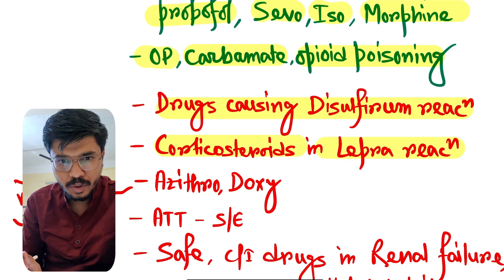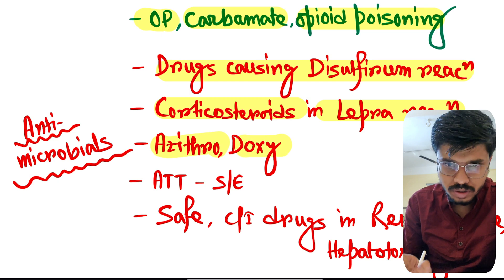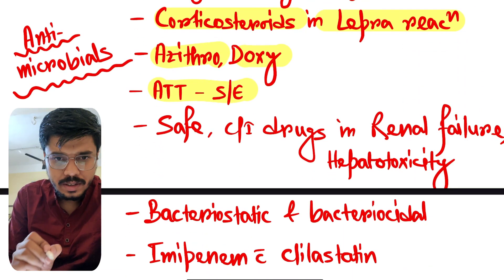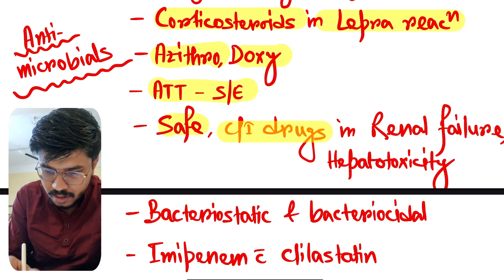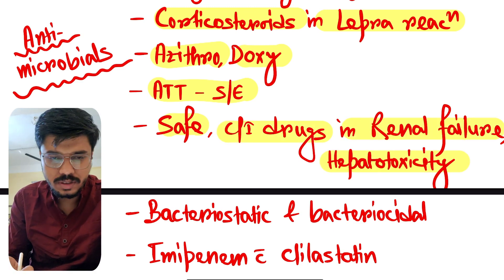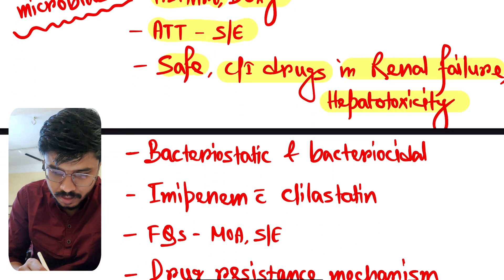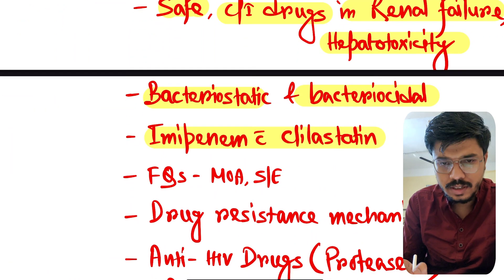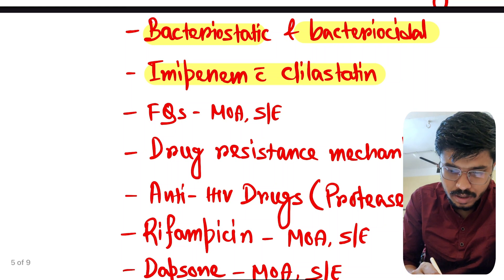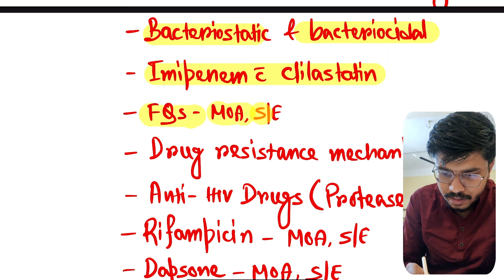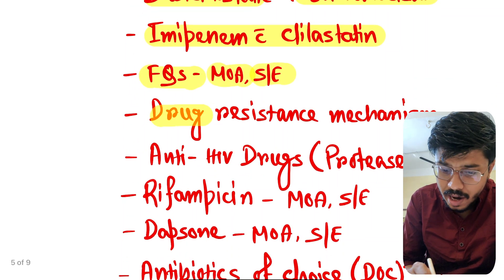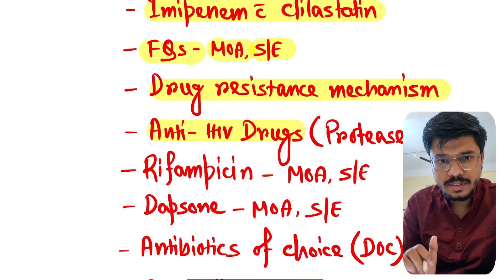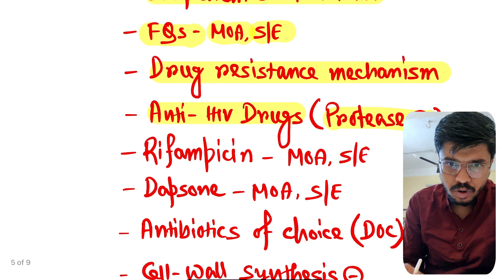Azithromycin, doxycycline, anti-tubercular drugs and their side effects. Safe drugs and contraindicated drugs in renal failure and hepatotoxicity — again important. Bacteriostatic and bactericidal drugs. Imipenem with cilastatin — important. Fluoroquinolones: mechanism and side effects. Drug resistance mechanism — again important.